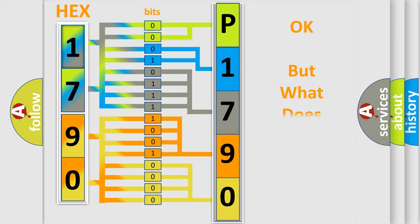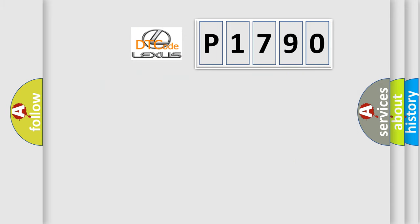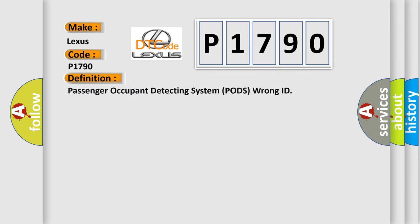We now know in what way the diagnostic tool translates the received information into a more comprehensible format. The number itself does not make sense to us if we cannot assign information about what it actually expresses. So, what does the Diagnostic Trouble Code P1790 interpret specifically for Lexus car manufacturers? The basic definition is: Passenger Occupant Detecting System (PODS) Wrong ID.